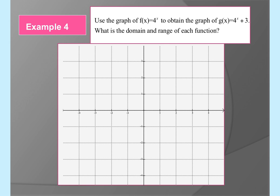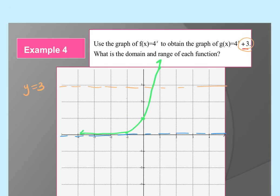Example: use the graph of f(x) = 4^x to obtain the graph of g(x) = 4^x + 3. The coordinate points for the parent function were (−1, 1/4) and (1, 4), with a horizontal asymptote at zero. Adding 3 outside the exponent shifts everything up three places — the asymptote moves to y = 3 and all points shift up three.